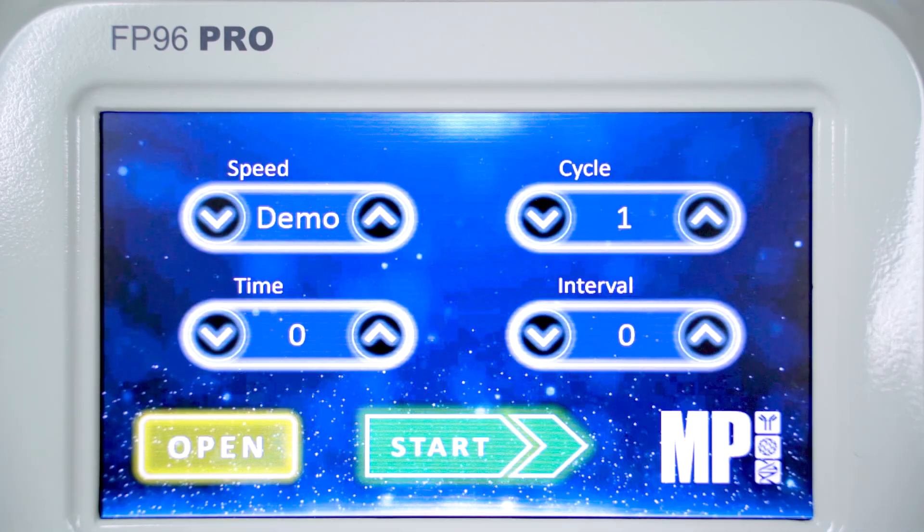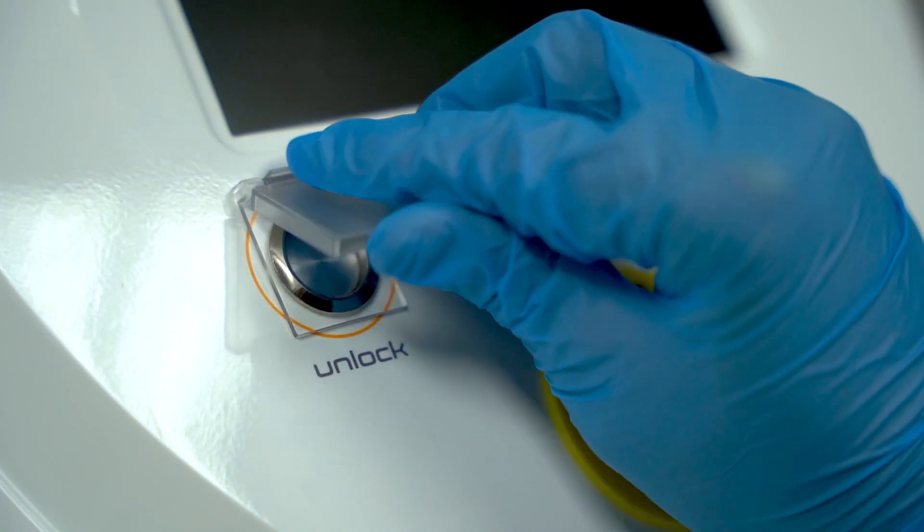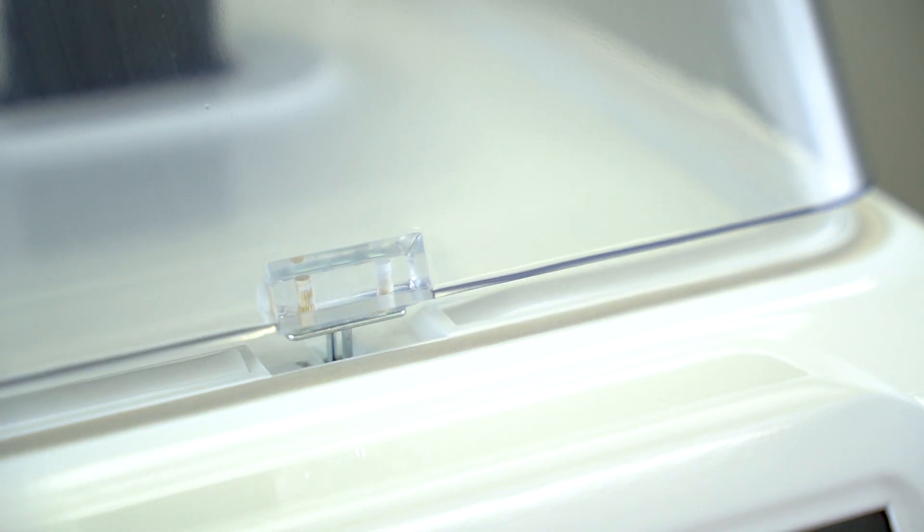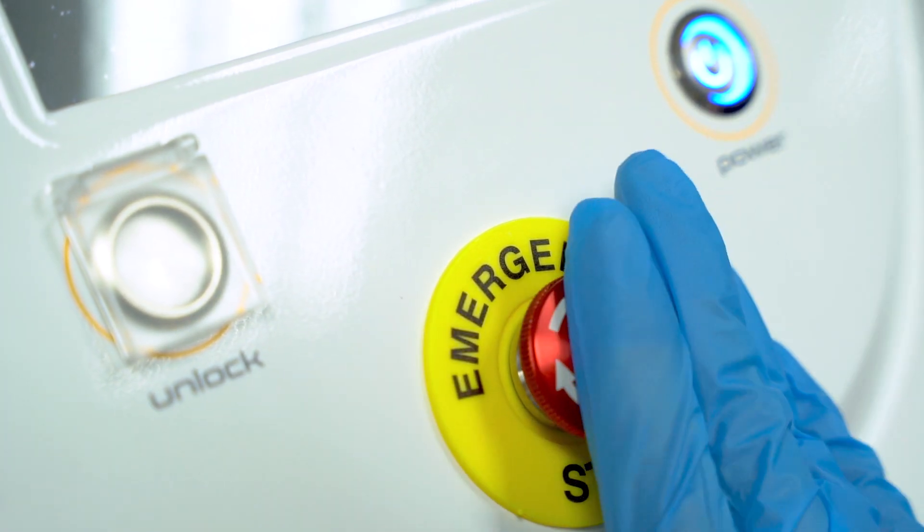In the event of a power failure, you can use the unlock button on the front of the machine to open the dome manually. If there's an emergency, simply hit the emergency stop button at the front to halt any ongoing actions.